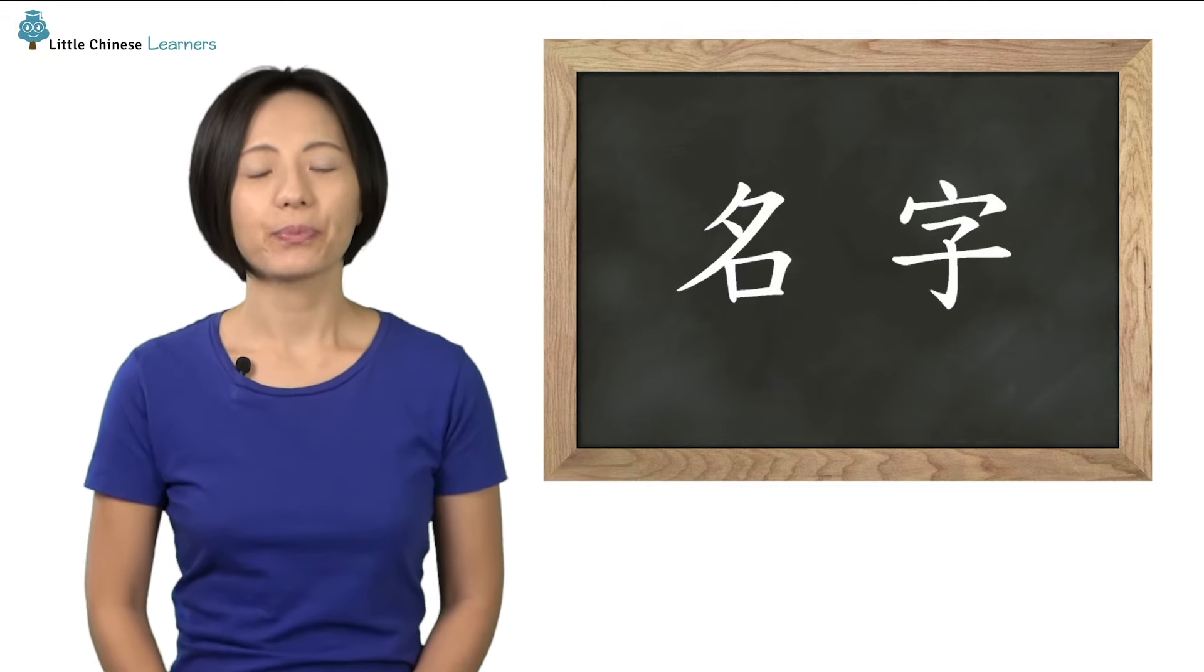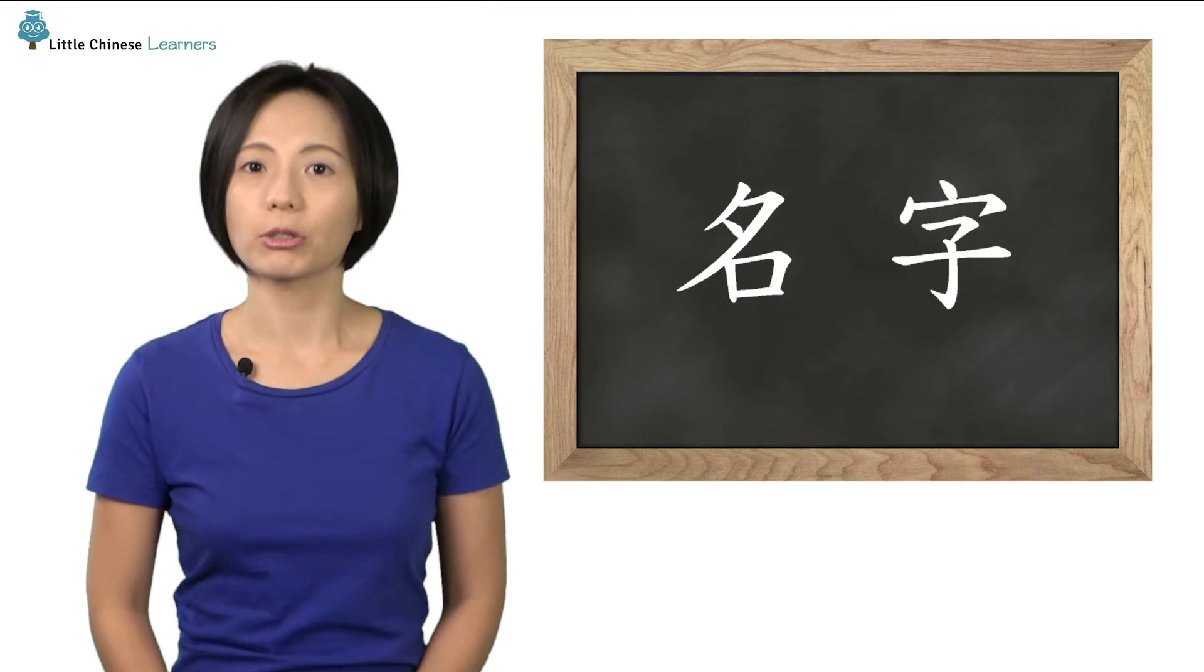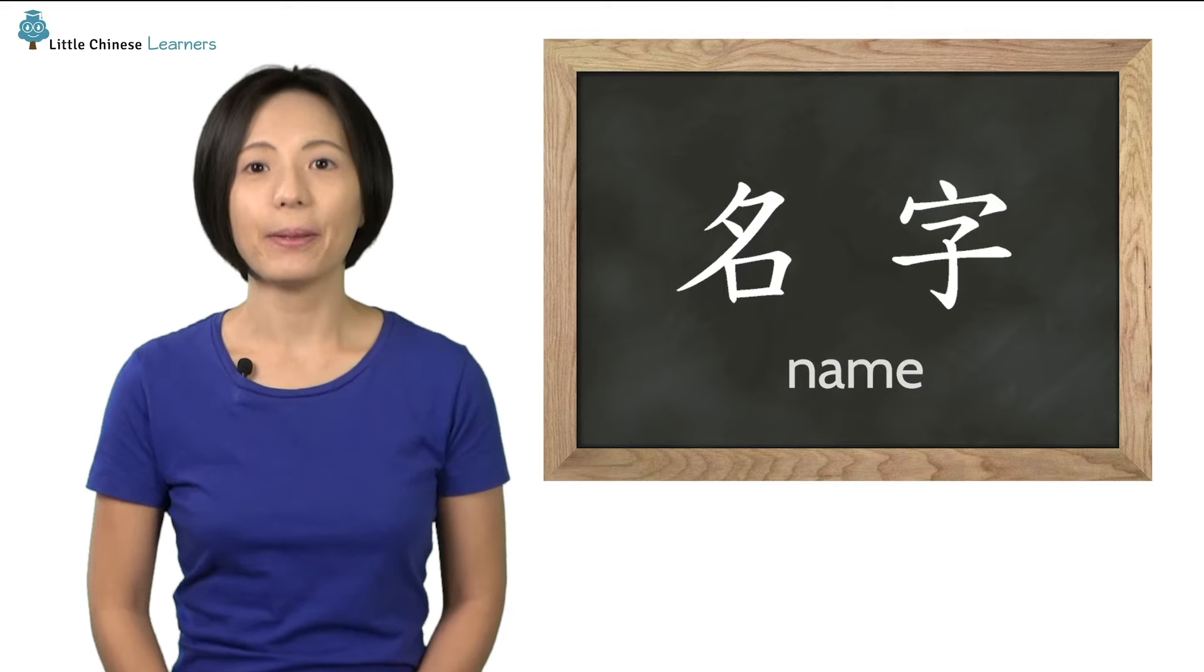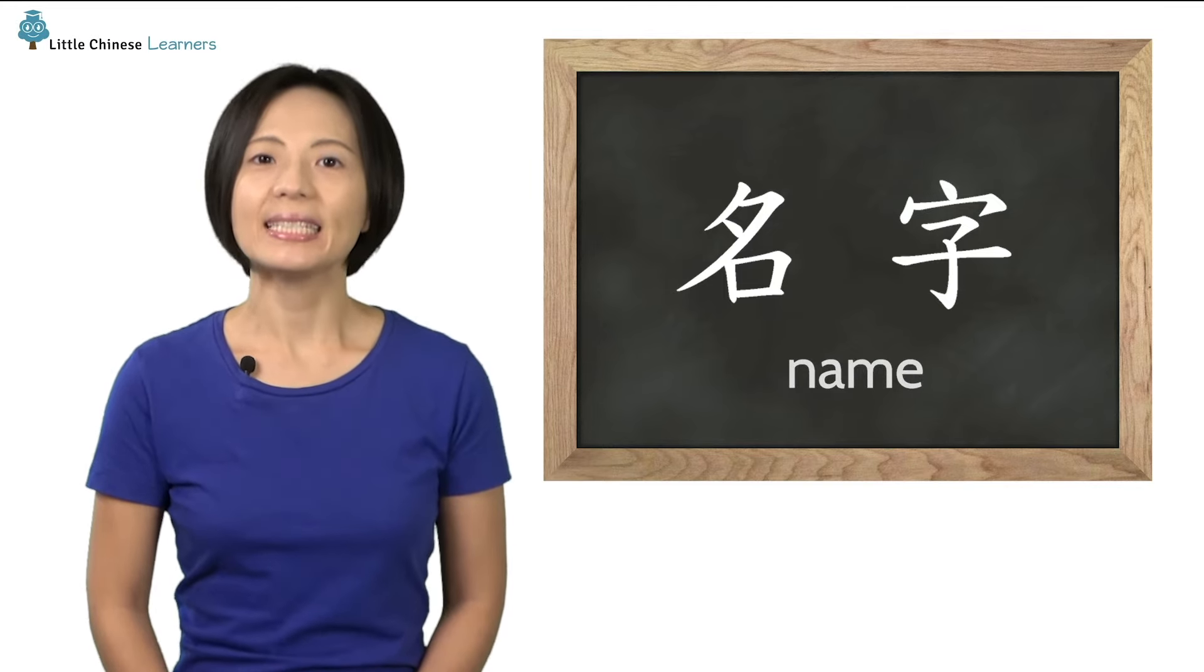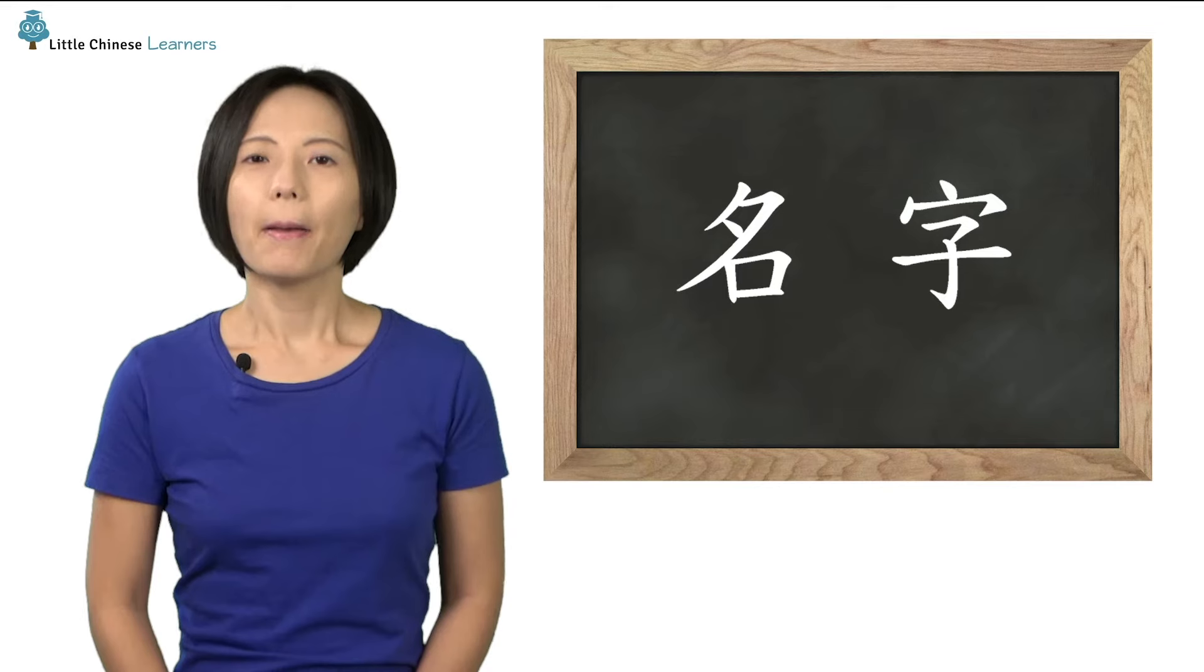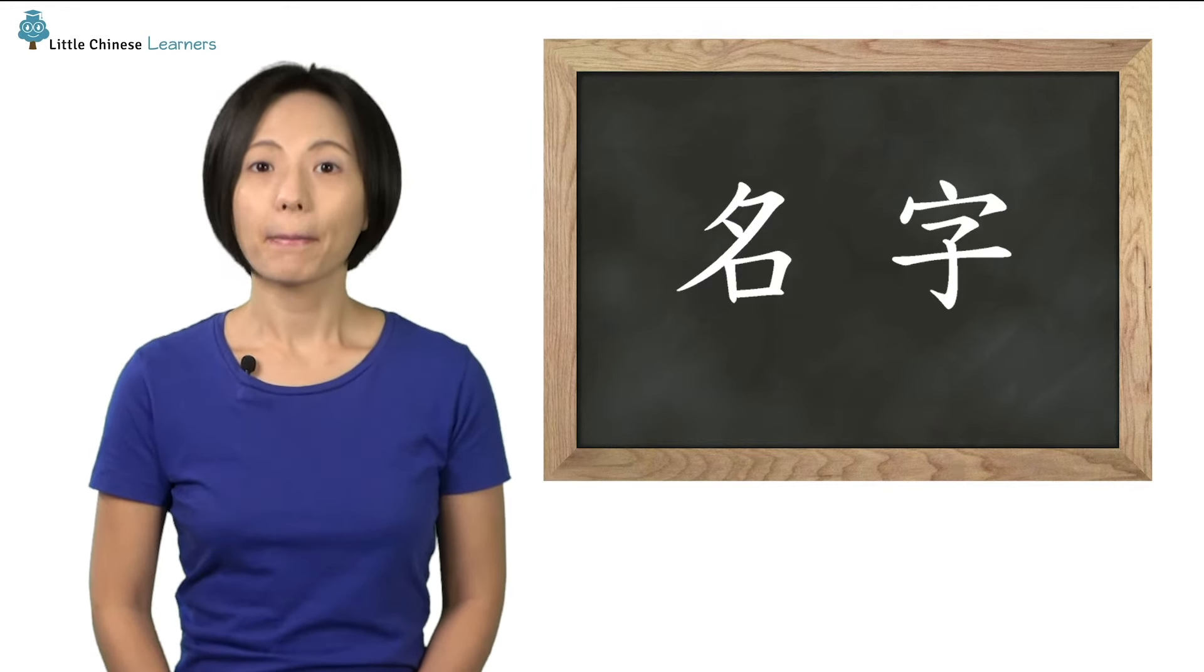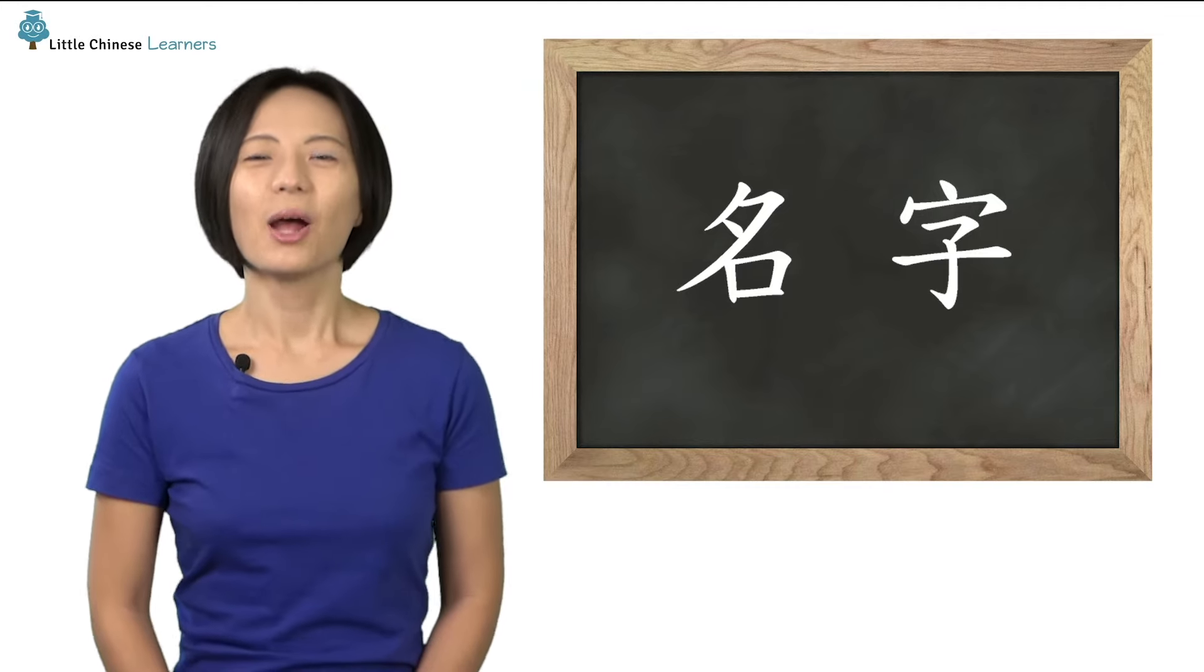And finally, the last two characters also go together. 名字, it means name. 名字, 名字. Let's try it. Perfect, 名字.